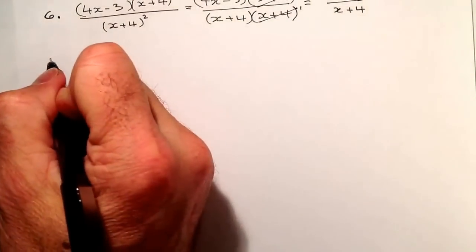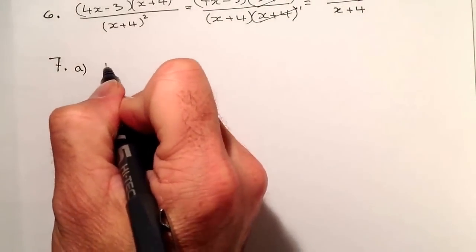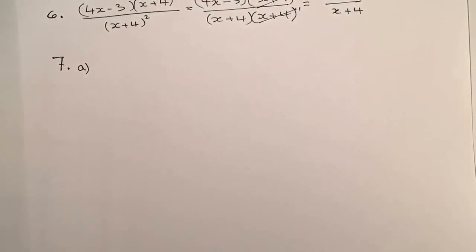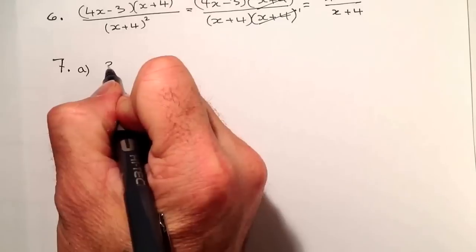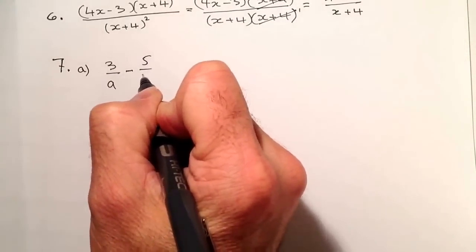I'll move on to question number 7. Question number 7 was the fraction division. We'll go for part A. Fraction division and also subtraction. The subtraction would be first. So I've got 3 over A minus 5 over B.